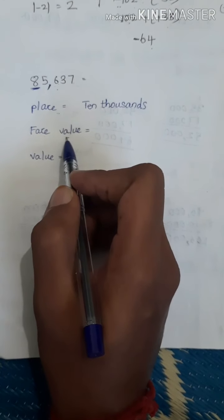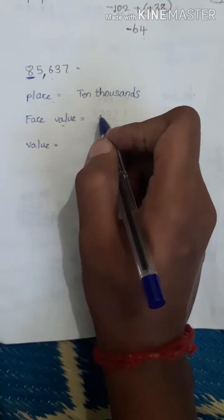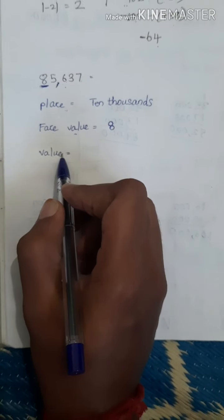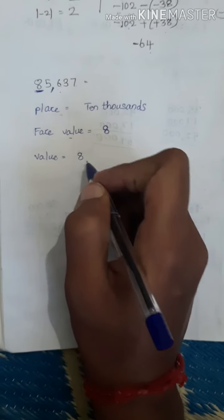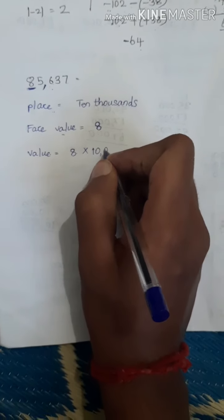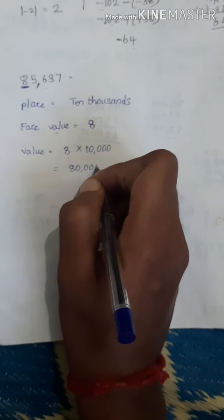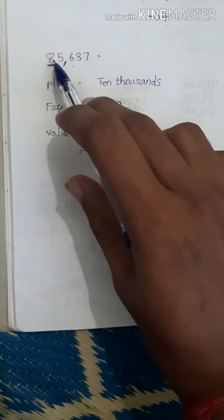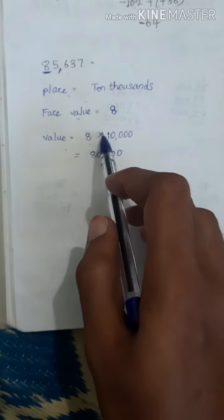Now face value. Face value will remain the same — which number is underlined? 8. So face value is 8. Don't change anything. Then for value — multiply the face value and place value. Face value is 8, place is 10,000. So 8 × 10,000 = 80,000. Just put remaining zeros as they are.